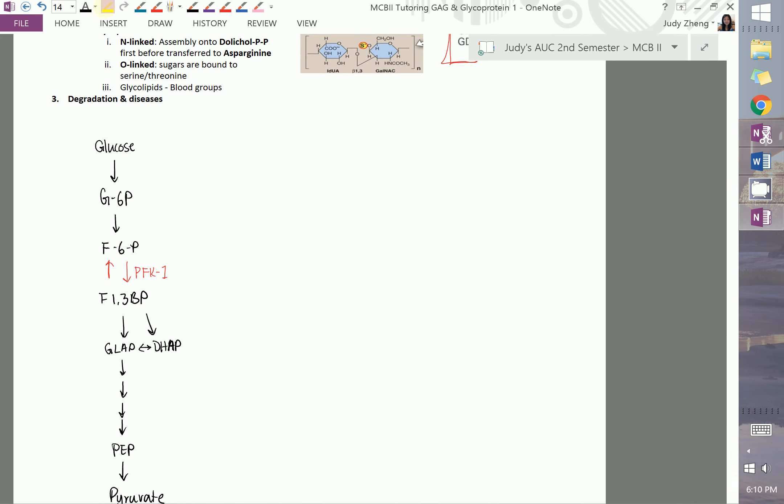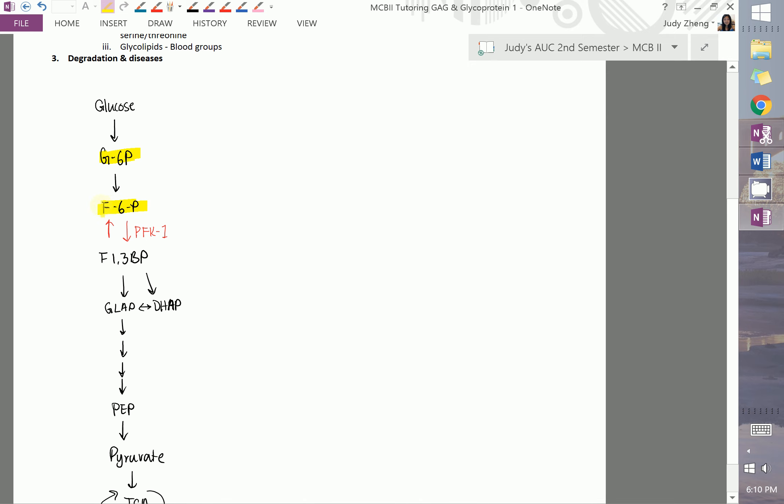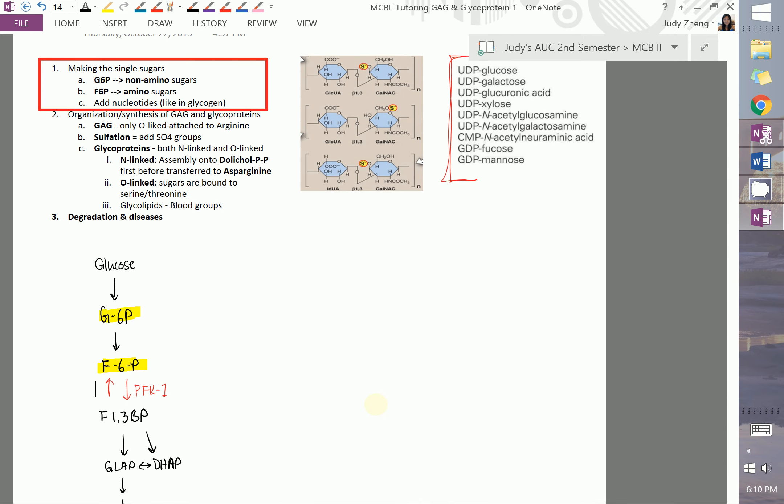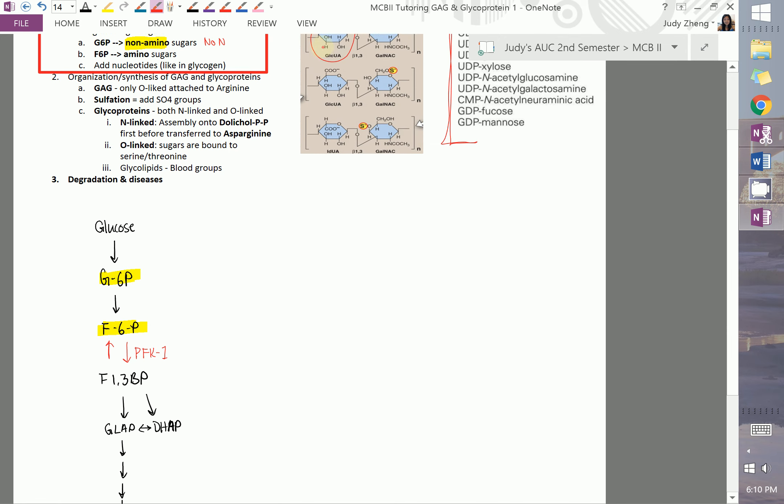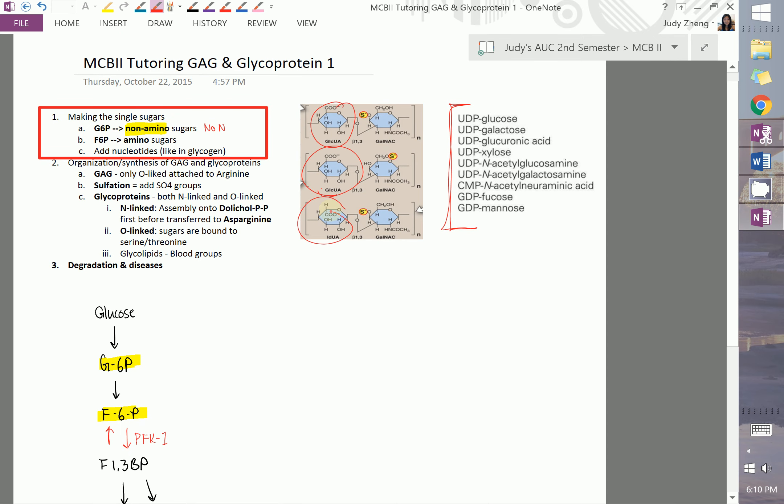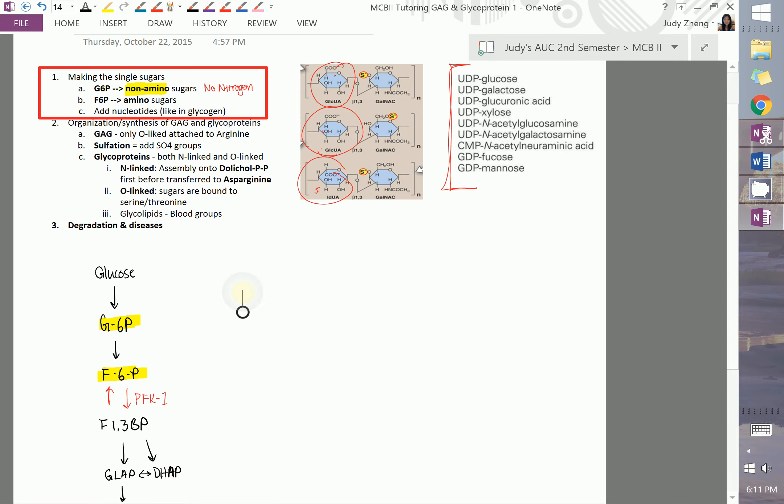What's important to note is these two: glucose-6-phosphate and fructose-6-phosphate. They will give you very different sugars in that the glucose-6-phosphate pathway, they don't have an amino group, they don't have the nitrogen. No nitrogen, right? So no nitrogen in the groups. If you look at this diagram, these are some examples of the sugars, and this one doesn't have any nitrogen. So these three sugars in this example will have started from the glucose-6-phosphate and not the fructose.